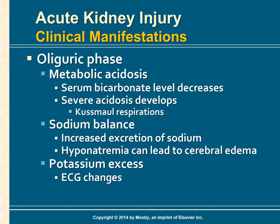Acidosis also worsens hyperkalemia because with acidosis the excess hydrogen ions enter the cells and potassium is driven out into the extracellular fluid. Hyperkalemia causes changes in the ECG, namely peaked T waves, widening of the QRS complex, and ST segment depression.